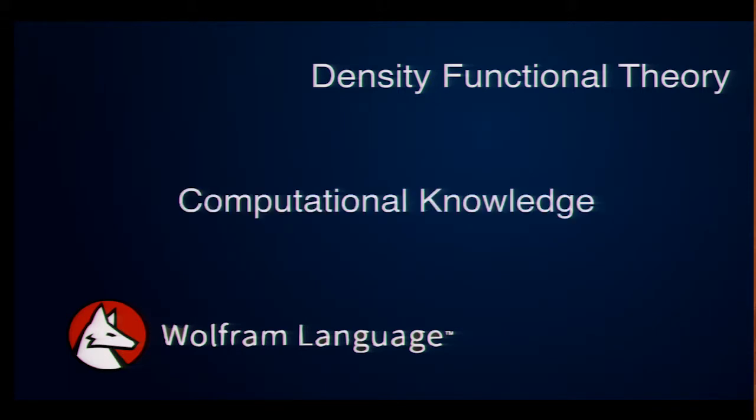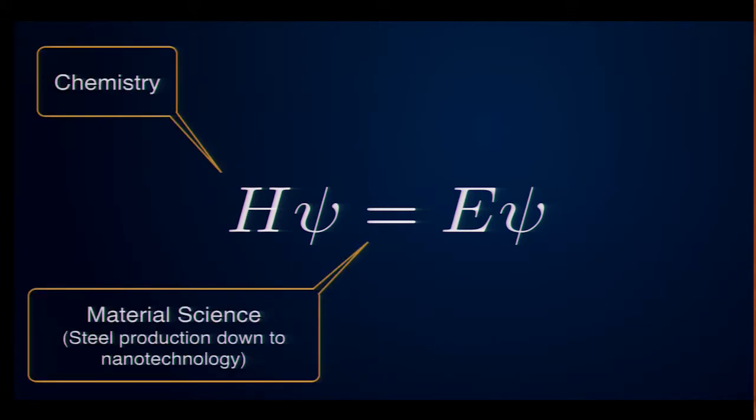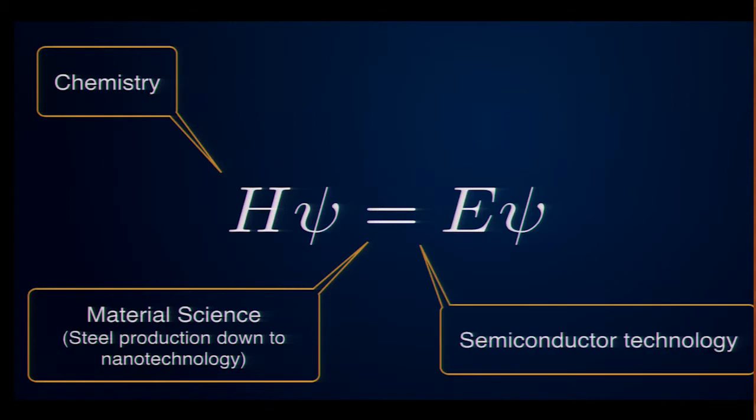So, in a nutshell, what it allows you to do is compute all sorts of material properties from very little knowledge, basically from just knowledge about basic quantum mechanics and natural constants. The dream behind the whole endeavor is that we would very much like to be able to solve this equation. This is Schrödinger's equation, as some of you might know, and it basically contains almost all of chemistry. It contains almost all of material science, which ranges from steel production down to nanotechnology, which in itself contains the semiconductor industry as a special case.